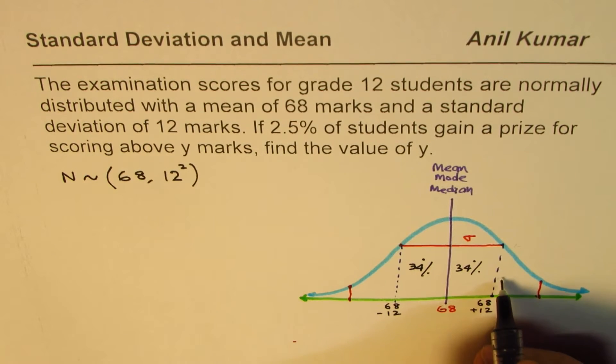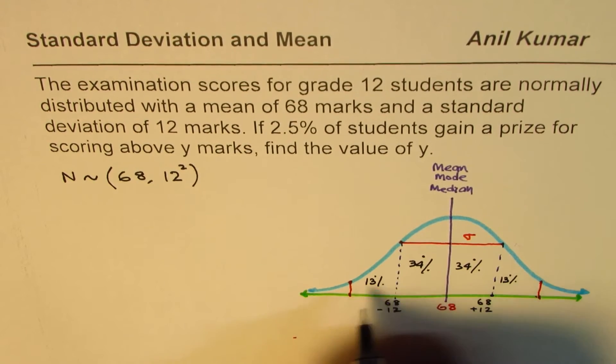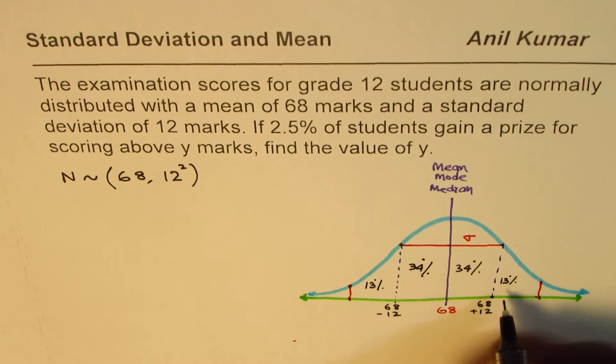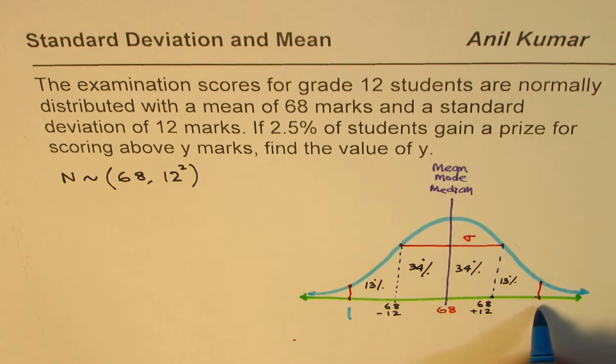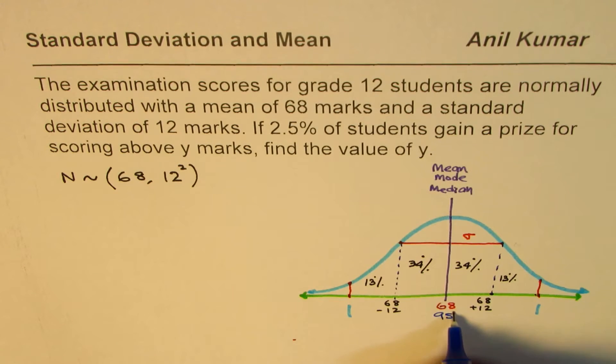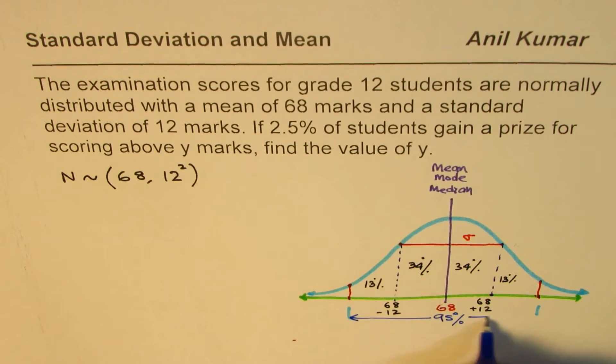Basically this is all 95%, so this is 34%, 34%, and the balance you can say 13.5% and 13.5%. What I'm trying to say here is that within this interval we have 95% of students.